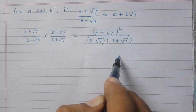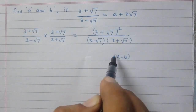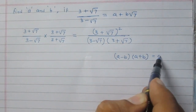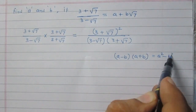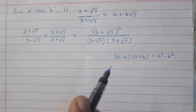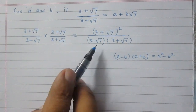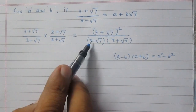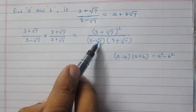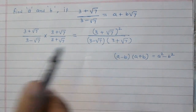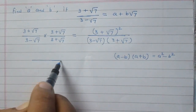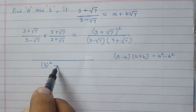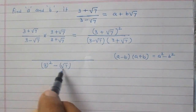Now consider the identity (a - b)(a + b) = a² - b². We can use this identity while solving the denominator, where a stands for 3 and b stands for √7. So in the denominator we will get a² - b².